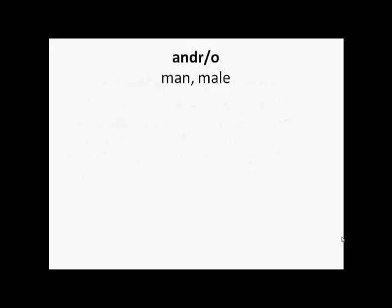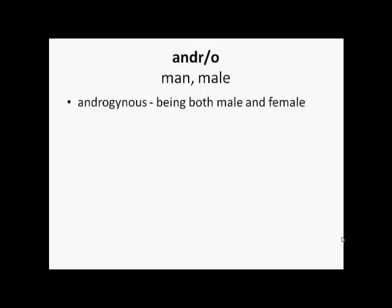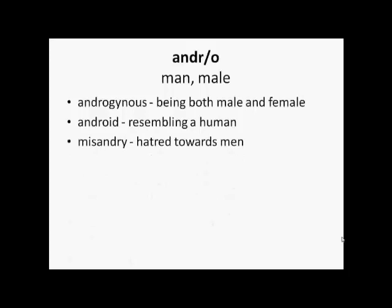'Andr' or 'andro' means man or male. So androgynous is being both male and female, where 'andro' is man and 'gyno' is female. Android means resembling a human — remember the logo for Android as used in smartphones. Misandry is hatred towards men, and so hatred towards women would be misogyny.